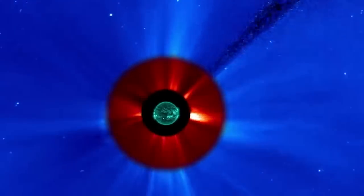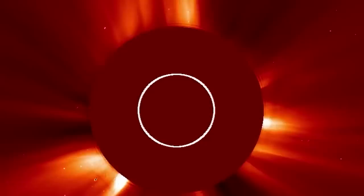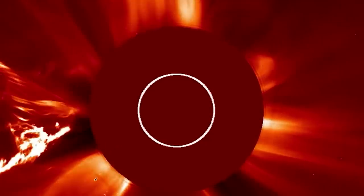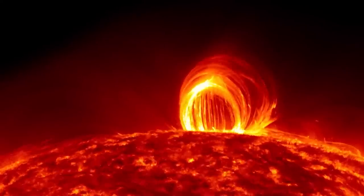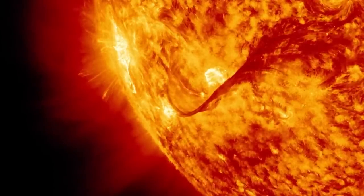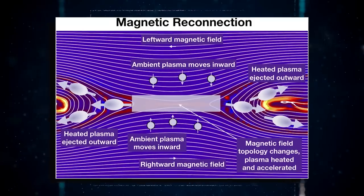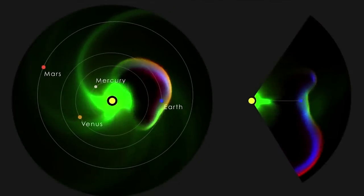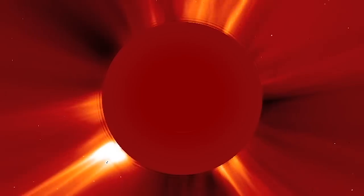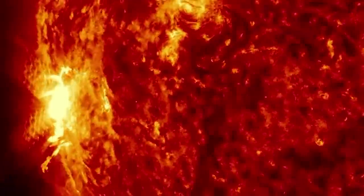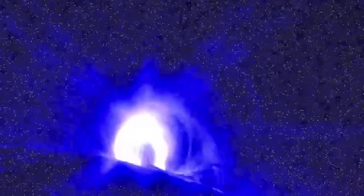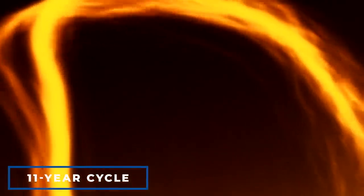CIRs are similar to coronal mass ejections. CMEs are ejected from the Sun and can contain shock waves and compressed magnetic fields, resulting in violent space weather. Coronal mass ejections, like solar flares, are created by the Sun's magnetic field bending and realigning, a process known as magnetic reconnection. CMEs are most common around sunspot groups and are most common during the Sun's 11-year cycle of activity when the star is at its most active.